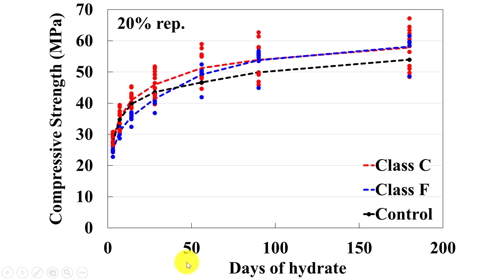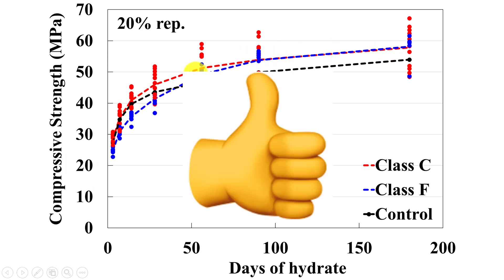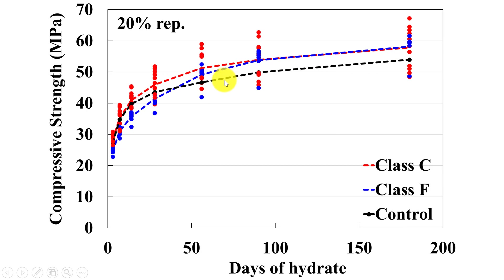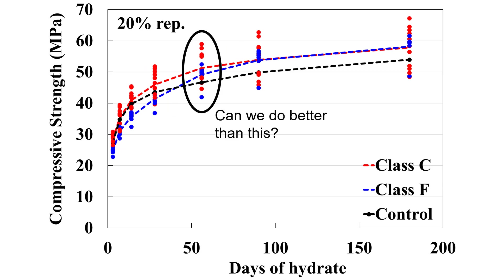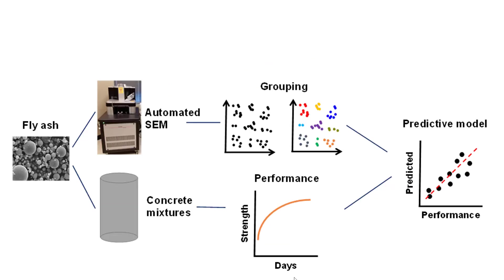On the x-axis I'm showing days, or how old the concrete is. On the y-axis I'm showing the compressive strength of that concrete, and over time you can see the concrete gets stronger and stronger. The black line is the control — no fly ash at all. The blue line is the average for Class F: a little bit lower early on, but then it gets stronger later. The red is the average for Class C: a little higher early on, then good long-term strength gain. But here is the question — can we do better than this? Look at that spread: there's like a 20 MPa spread there. So we decided to take a different approach.